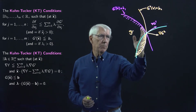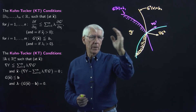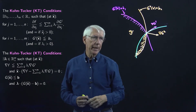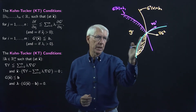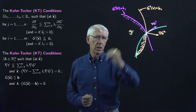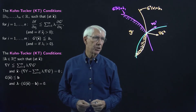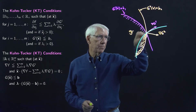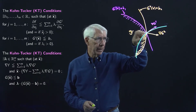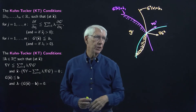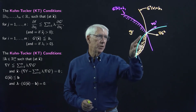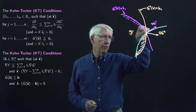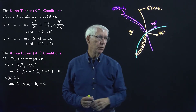The feasible set is on this side of each constraint — this is the less than or equal side of each constraint — and that means the gradients point in these directions. These are the directions of increase of the G1 function and the G2 function.